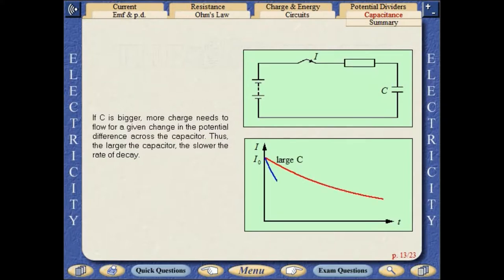If C is bigger, more charge needs to flow for a given change in the potential difference across the capacitor. Thus the larger the capacitor, the slower the rate of decay.